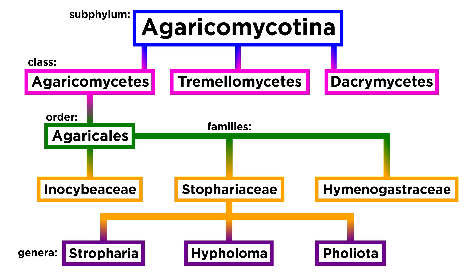We will discuss important species from three genera in the family Strophariaceae: Stropharia, Hypholoma, and Pholiota.